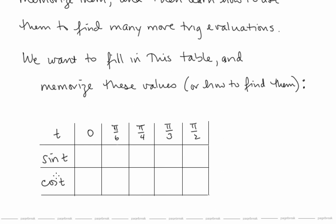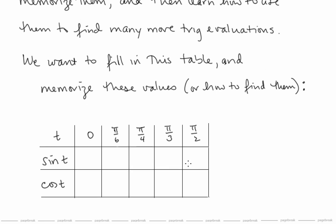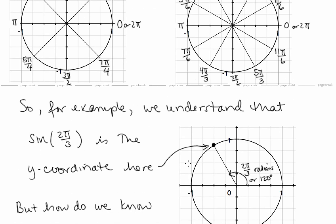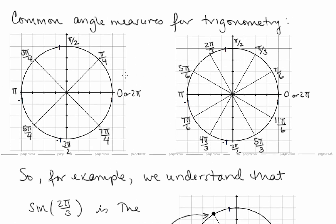We want to fill in a table of sine and cosine values for t — the angle in radians — at 0, π/6, π/4, π/3, and π/2. Knowing these values, we'll be able to get trig evaluations at all of the values along the circles here.